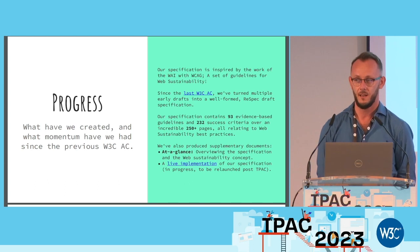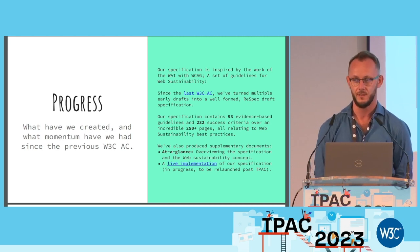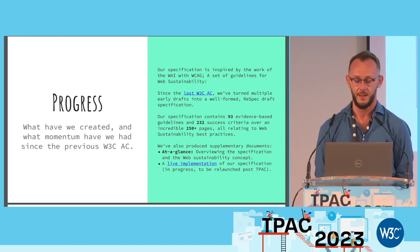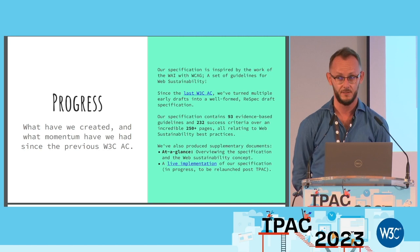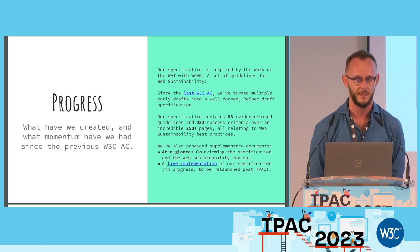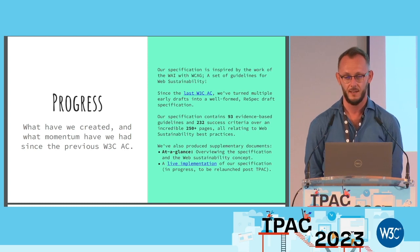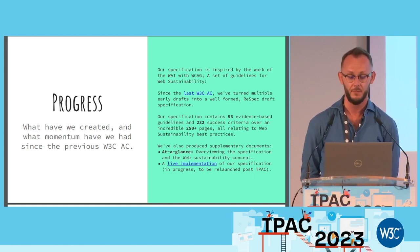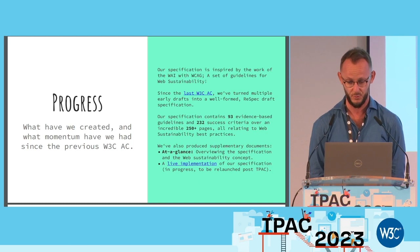Some of you might have seen an early version of our work a couple of months ago at the previous AC meeting. Since then, we did a number of iterations through the content of the guidelines — merging guidelines from different committees, formatting them into Respec — and just a couple of days ago we published them onto W3C GitHub. We ended up with 93 guidelines, along with more than 200 success criteria to help people implement them, and the whole document is currently more than 200 pages long.